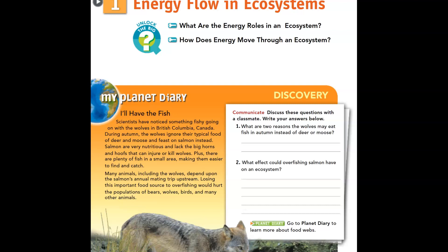Deer and moose have giant antler horns that can stab them — that wouldn't be fun. Question two says: what effect could overfishing salmon have on an ecosystem? Overfishing means that humans are getting a lot of fish at one time that they don't really need. So the salmon population is going to decrease. The number of predators eating the salmon will also decrease — either they'll be starved out or go elsewhere in search of food. Because those predators are leaving, they're not eating the fish left over, so the fish population can increase. It's an endless cycle.